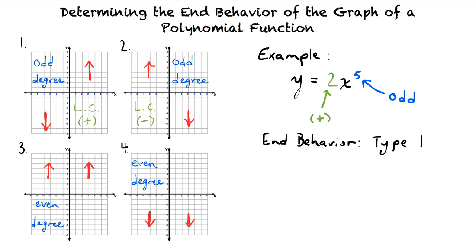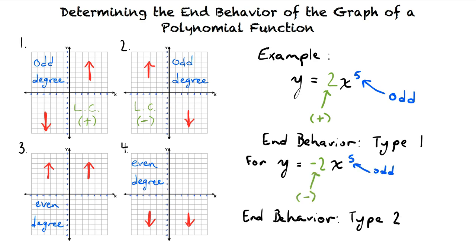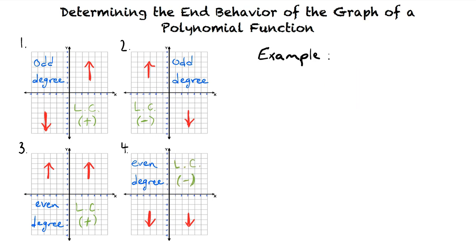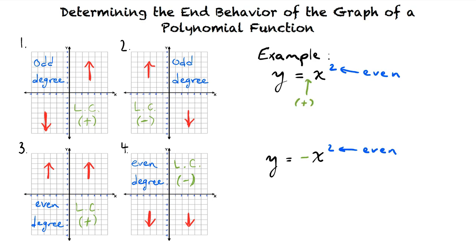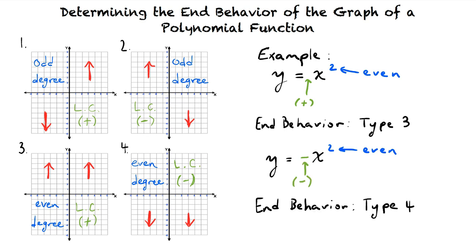If the function was y equals negative 2x to the fifth, then the graph would rise to the left and fall to the right because of the negative leading coefficient. If the degree of the function is even and the leading coefficient is positive, then both ends rise. If the degree is even and the leading coefficient is negative, then both ends fall. For example, for the two functions y equals x squared and y equals negative x squared: both have an even degree of 2. The first has a leading coefficient of positive 1, so both ends rise — type 3. Because the leading coefficient of the second function is negative, both ends fall — type 4.